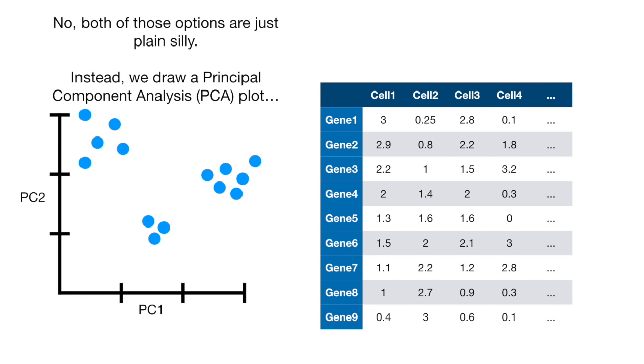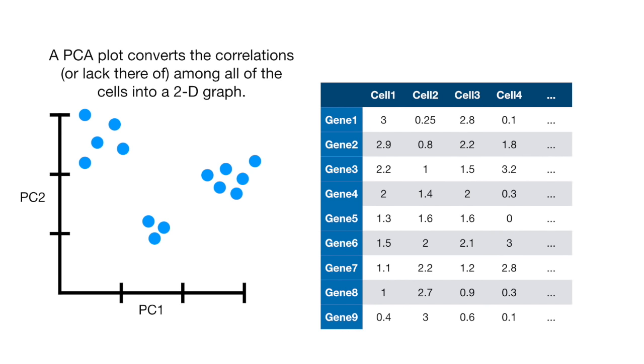Both of those options are just plain silly. Instead, we draw a principal component analysis or PCA plot. A PCA plot converts the correlations or lack thereof among the cells into a 2D graph.